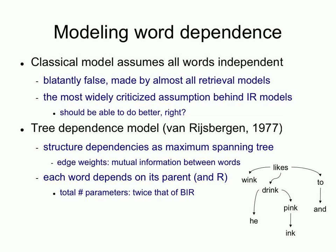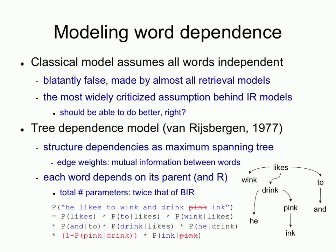A spanning tree would look something like this. With a vocabulary from the document 'he likes to wink and drink pink ink,' this is an example of what an MST-dependent structure could look like. 'Likes' could be the root term; occurrence of 'wink' would depend on whether 'likes' occurred. Same for 'drink' and 'to.' The word 'and' would depend on whether 'to' occurs, and so on. 'Likes' itself depends on the root of the tree.